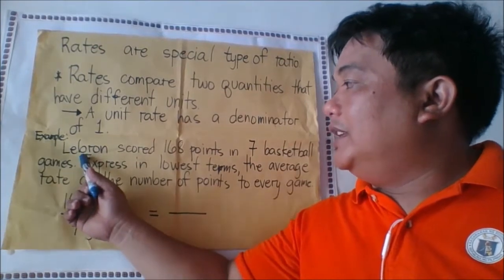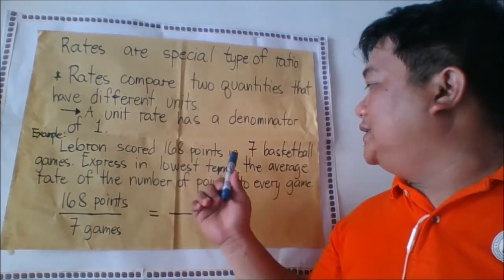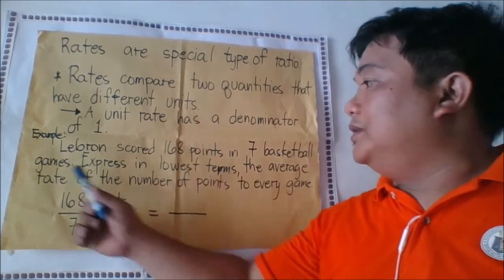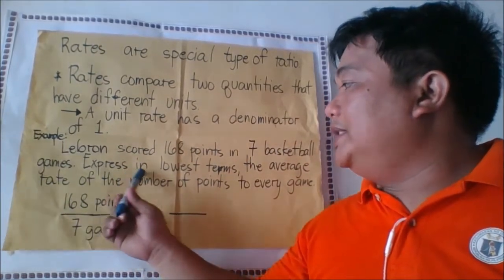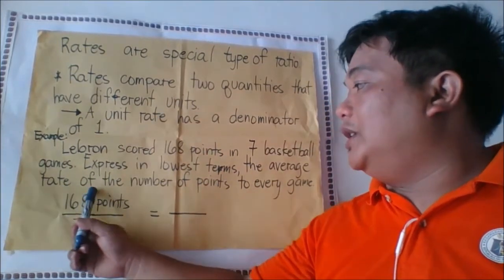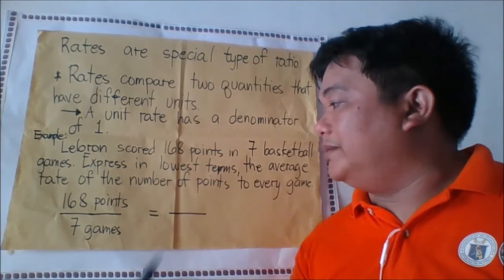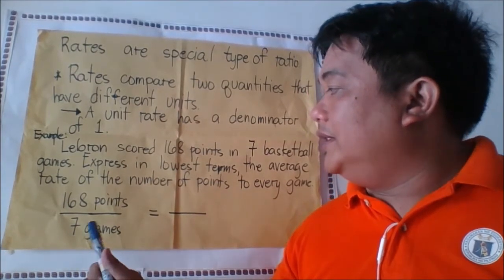For example, Lebron scored 168 points in 7 basketball games. Express in lowest terms the average rate of the number of points to every game.